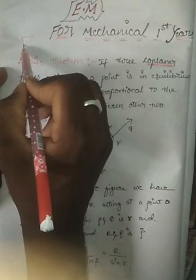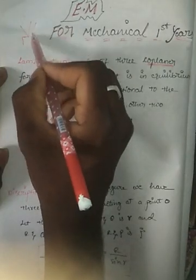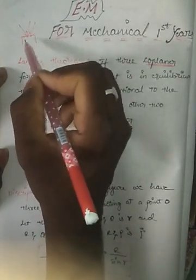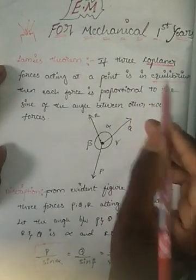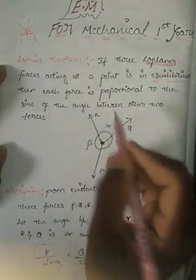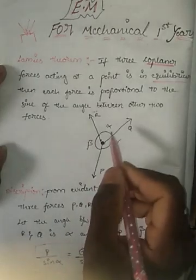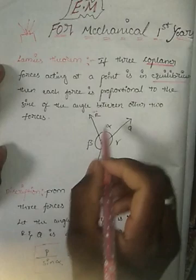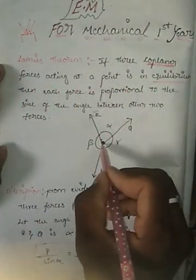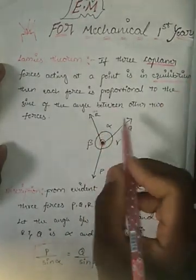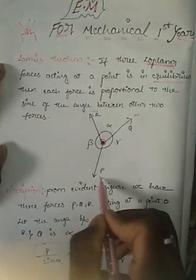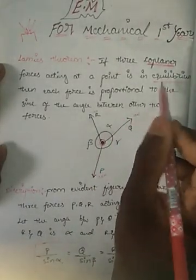For example, if three forces act on one plane, those are coplanar forces. Equilibrium means the forces are balanced at one point — for example, 10 Newtons, 10 Newtons, and 10 Newtons acting at a point. When these three forces are equal, that is equilibrium.